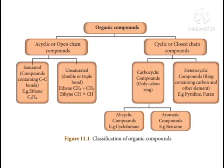Open-chain compounds are also classified into two types: saturated and unsaturated. Saturated means the compound contains only carbon-carbon single bonds — all bonds are single bonds only. Unsaturated means at least one or more double bonds or triple bonds are present between the carbon atoms. That type of compound is called unsaturated. This is the general classification of organic compounds.